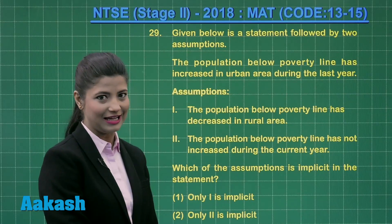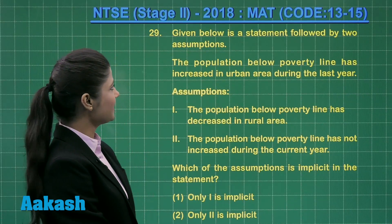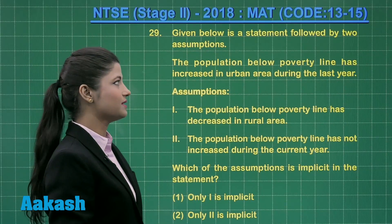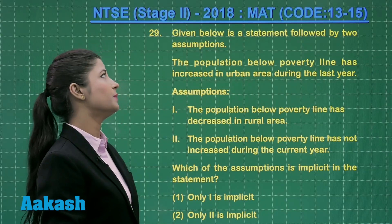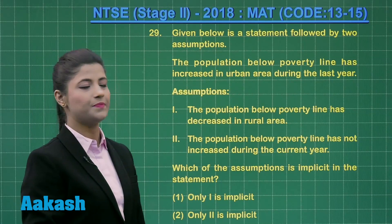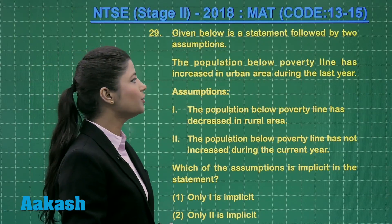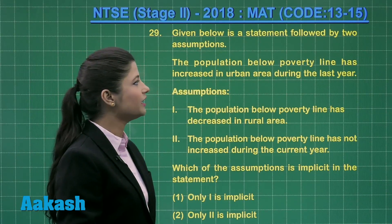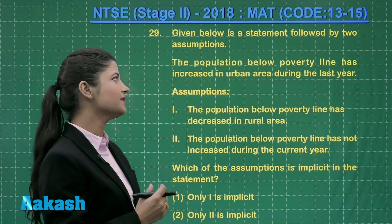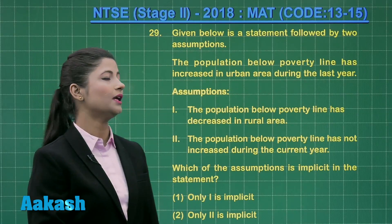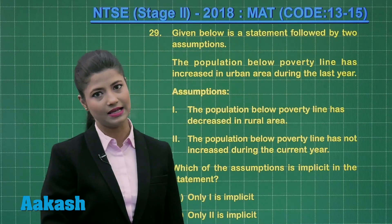Let us solve question number 29. It states: given below is a statement followed by two assumptions. The statement is: the population below poverty line has increased in urban area during the last year.